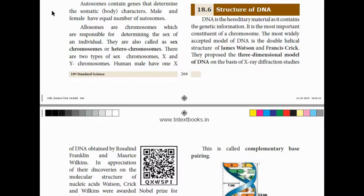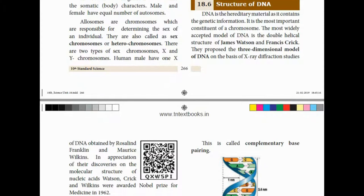Next is the structure of DNA. DNA is the hereditary material as it contains the genetic information. DNA contains the genes that we carry. One important model is the double helical structure proposed by James Watson and Francis Crick. This three-dimensional model of DNA was proposed based on X-ray diffraction studies of DNA obtained by Rosalind Franklin and Maurice Wilkins.